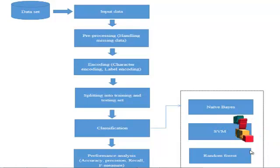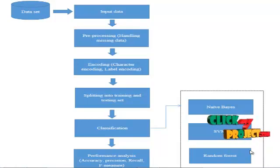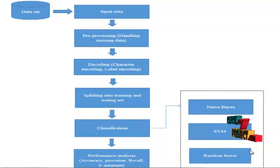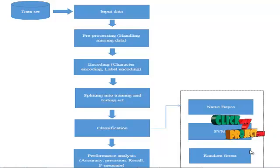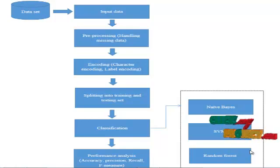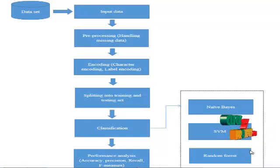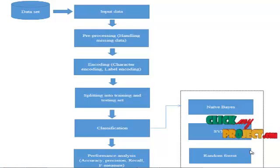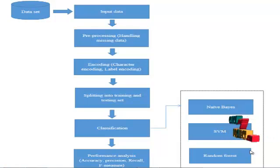After splitting the dataset into training and testing sets, the classification algorithms are performed. We apply three classification algorithms: Gaussian Naive Bayes, Support Vector Machine, and Random Forest. Based on these, the performance metrics — accuracy, precision, recall, and F-measure — for each algorithm are calculated and displayed.